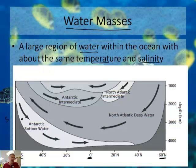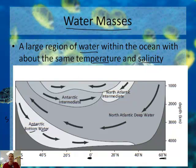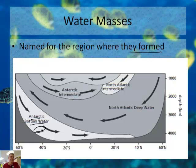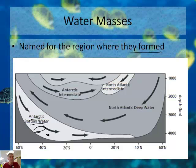Looking at the south side, we've got something called Antarctic Bottom Water. The water masses are named for the region where they are formed or where they come from. Antarctic Bottom Water comes from the Antarctic and stays on the bottom. This is the coldest and most dense water in the world. Because it's cold and saltiest, it's the most dense, so it goes to the bottom but flows north. And then you've got the North Atlantic Deep Water from the North Atlantic Ocean — it's deep and also flows downhill.